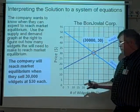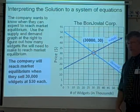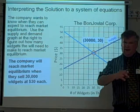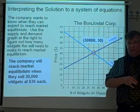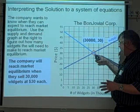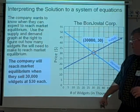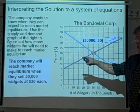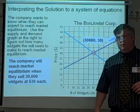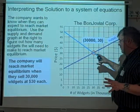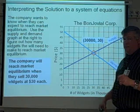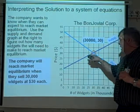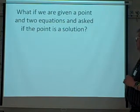So the company will reach market equilibrium when they sell 30,000 widgets at $30 each. Notice how when I describe this point, just like when I describe points in regular equations, not just systems in regular equations, I describe both the x and the y value. Thirty for the dollars, 30,000 for the number of units. I include both in my description. Describing or interpreting the point of the solution to a system of equations is as simple as describing the x and y value as it relates to the real world of the point where the two lines cross.